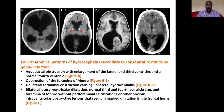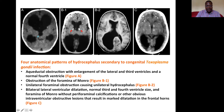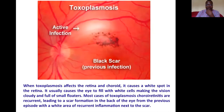CT imaging shows different patterns of hydrocephalus. Unilateral foraminal obstruction can affect the lateral and third ventricles. Obstruction of the foramen of Monro leads to localized hydrocephalus, and unilateral foraminal obstruction can cause unilateral hydrocephalus. Bilateral ventricular dilation may also occur with normal third and fourth ventricles.